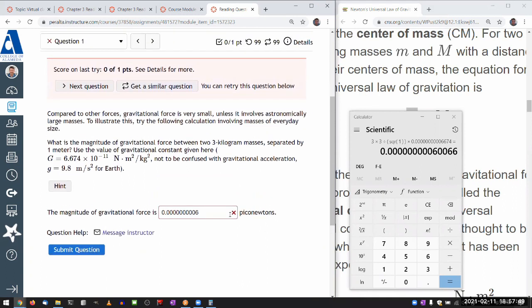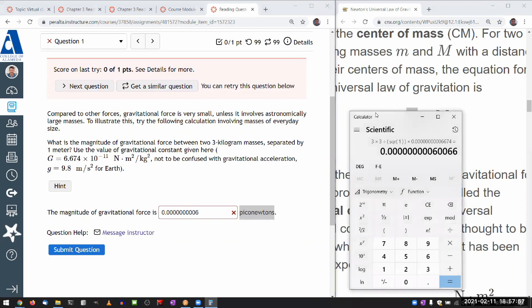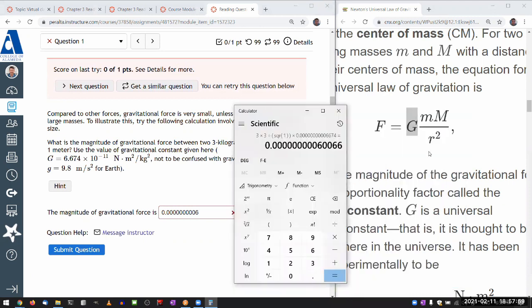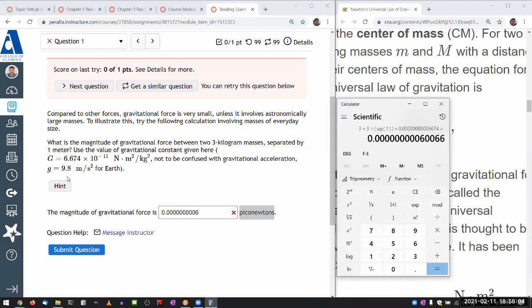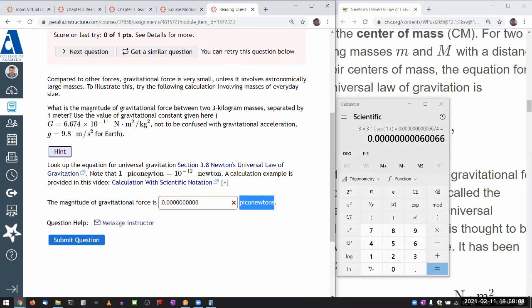What I missed is that I'm supposed to answer in piconewtons. And if you work out all these units with this G times m times m over r squared, the unit you have is newtons, not piconewtons. That's what Hint was getting at. Note that 1 piconewton is 10 to the minus 12 newton.